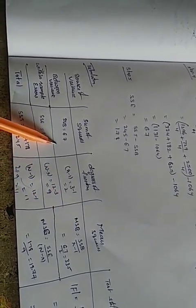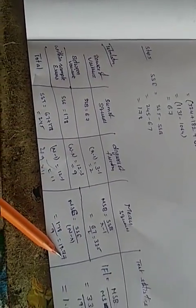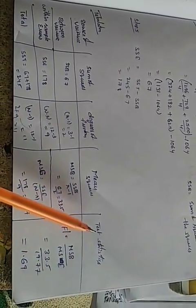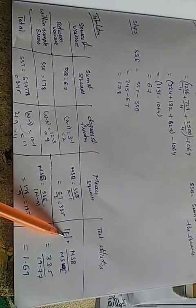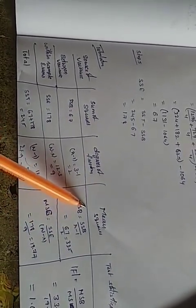Mean squares: MSB equals SSB divided by degrees of freedom between samples, which is 67 divided by 2 equals 33.5. MSE equals SSE divided by degrees of freedom for errors, which is 178 divided by 9 equals 19.77. The test statistic F equals MSB divided by MSE, which is 33.5 divided by 19.77, giving F equals approximately 1.67.